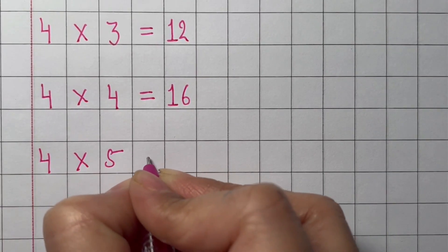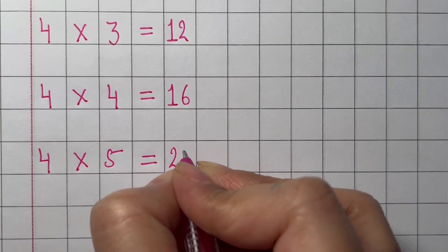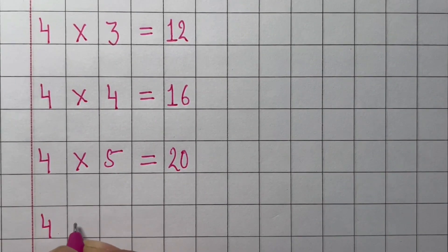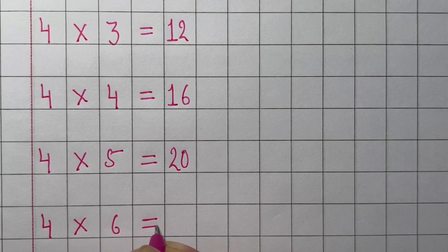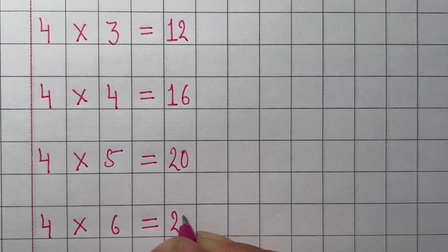Five times 4 equals 20. Six times 4 equals 24.